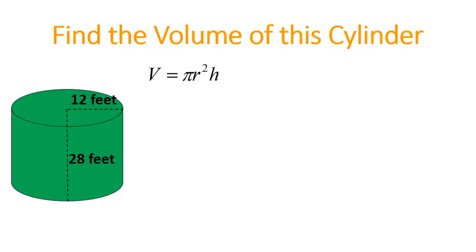Find the volume of a cylinder. Our volume is pi r squared times h. In other words, the area of the circle times the height of the cylinder. Let's plug it in.